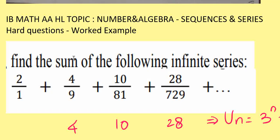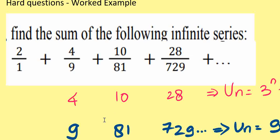Today we're going to discuss finding the sum of the following infinite series: 2 over 1, plus 4 over 9, plus 10 over 81, plus 28 over 729, and so on. Since this is not a geometric series nor an arithmetic series, we cannot find the common ratio or the common difference if we take the series as a whole. So what we do is separate each term.